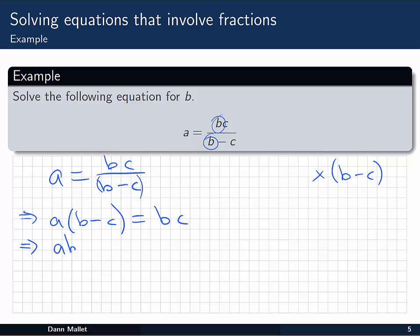Next I'm going to expand the left-hand side so that I can get out the b and eventually try to isolate it. I get ab minus ac, and bc stays on the right. Now I need to get all my b's onto the same side, so I subtract bc from both sides. I'm also going to add ac to both sides to move that over to the right.